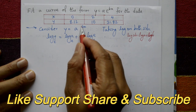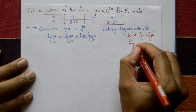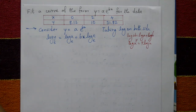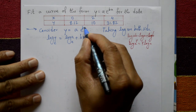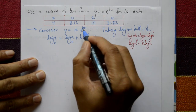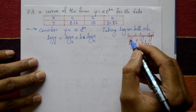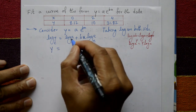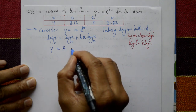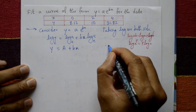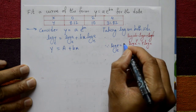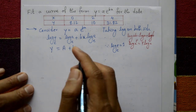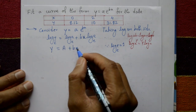Also using the property log(x^p) = p·log x, so bx·log e (base e). Since log e to the base e equals 1, we get: Y = A + bx, which is a straight line, where capital Y = log y (base e) and capital A = log a (base e).